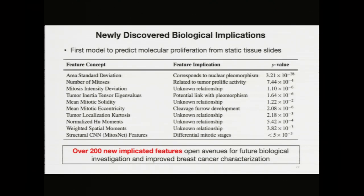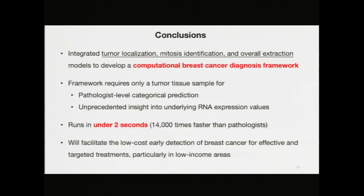My model also discovered new biological implications regarding proliferation from static tissue slides. These are features that biologists haven't yet been able to identify because they simply don't have the time. Some of these features have already been confirmed, but many leave room for salient development in biological analysis. In particular, I identified over 200 novel features that may open avenues for future biological investigation and improve breast cancer classification. Confirmed features include the number of mitoses, which is currently used in clinical practice, and the main mitotic area standard deviation, which corresponds to nuclear pleomorphism tied to breast cancer. Novel features include structural, spatial, and distribution attributes of mitoses, as well as cytokinesis, which have not yet been implicated in breast cancer severity.